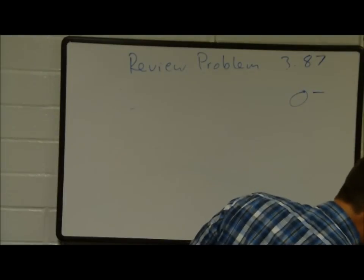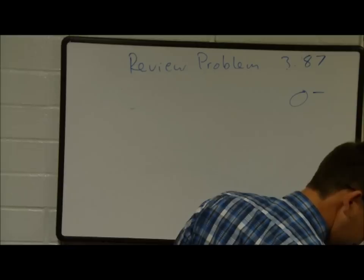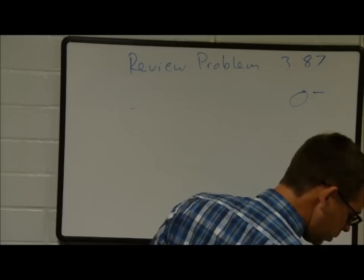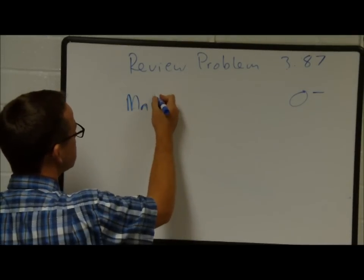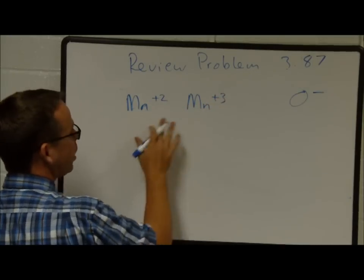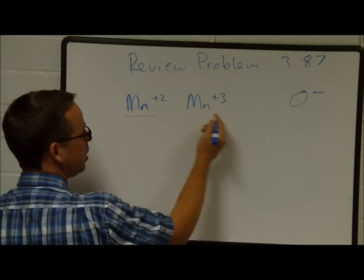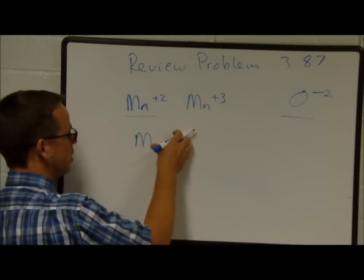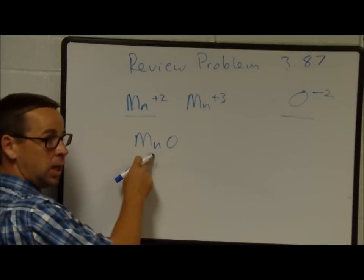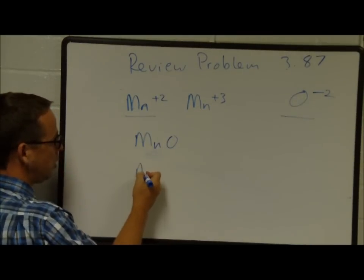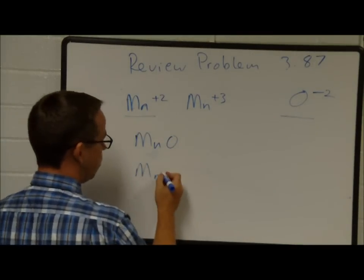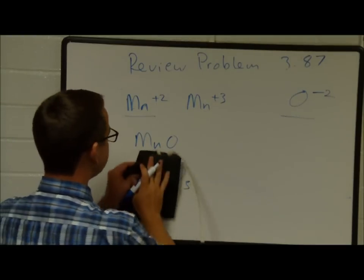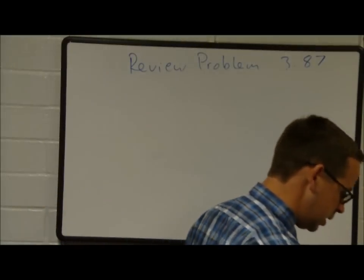387C: Manganese forms Mn²⁺ and Mn³⁺. Manganese 2 oxide is MnO — one manganese and one oxygen in a 1-to-1 ratio. Manganese 3 oxide is Mn₂O₃ — we need two manganese and three oxygen to balance the charges.